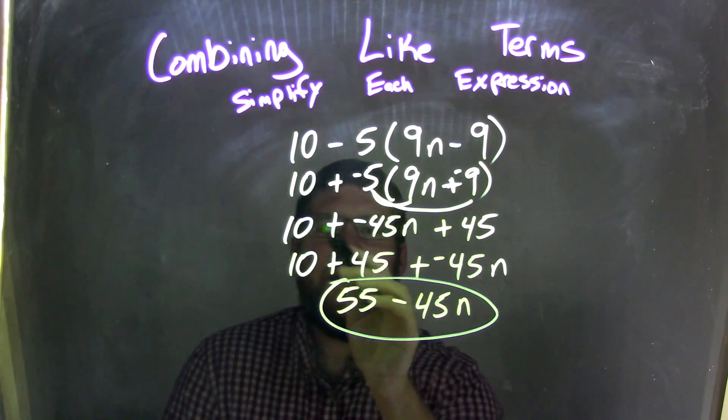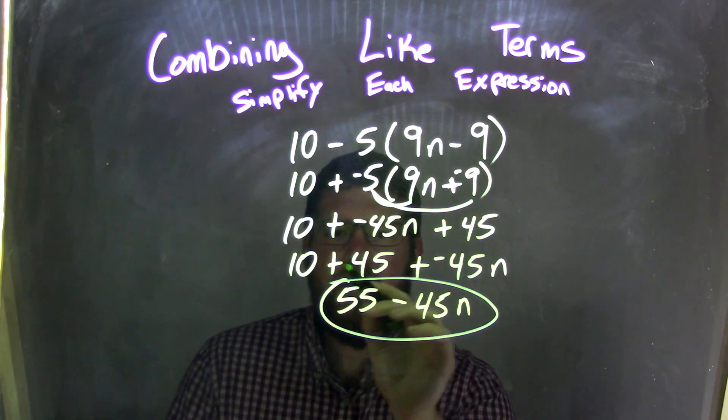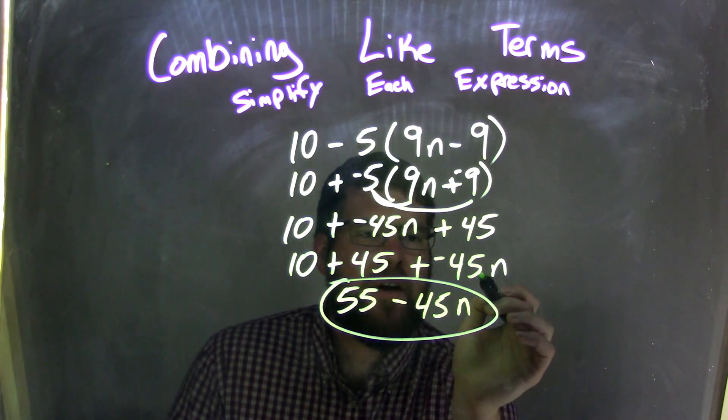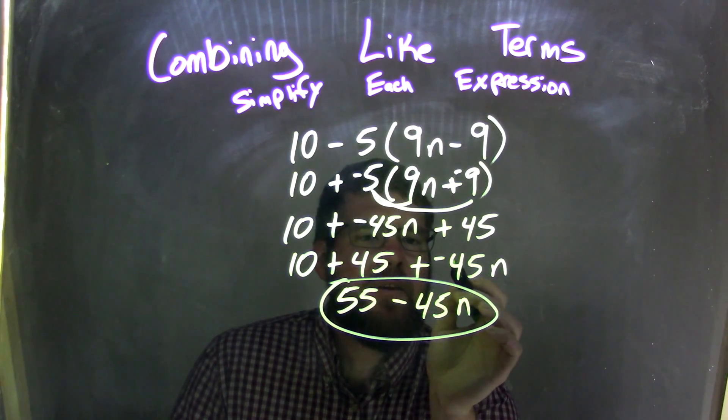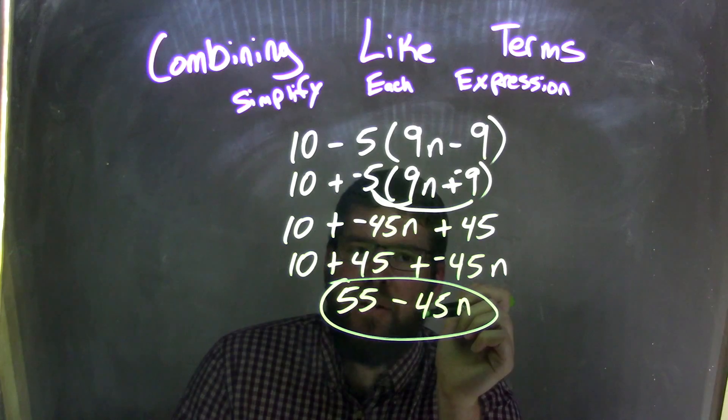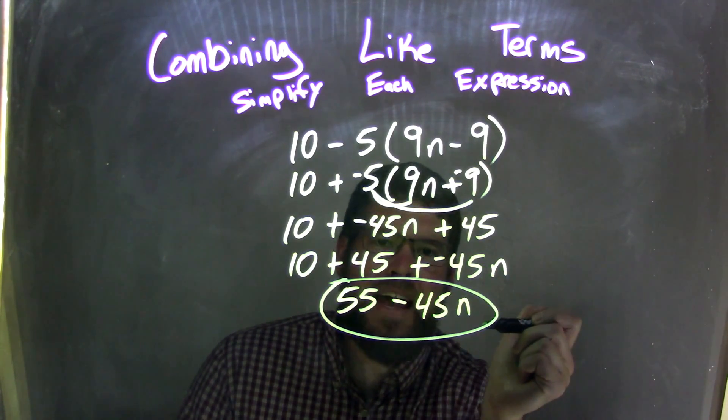So now I have 10 plus negative 45n plus 45. Use the commutative property to rearrange it. I have 10 plus 45 plus a negative 45n. 10 plus 45 is easy, it's 55. Adding a negative is the same as subtraction, that looks cleaner. And so now our final answer is 55 minus 45n.